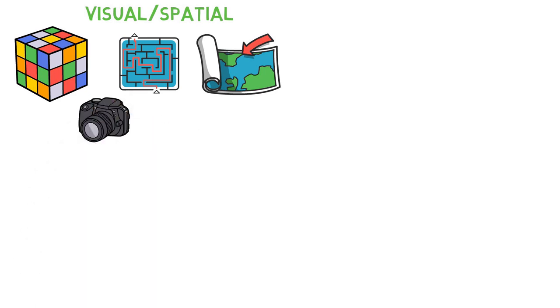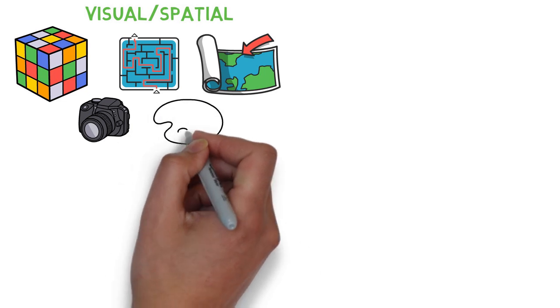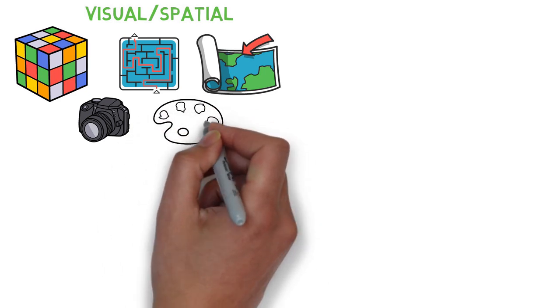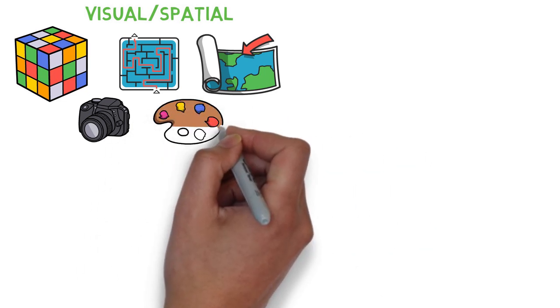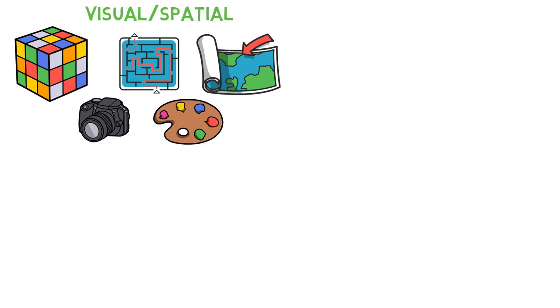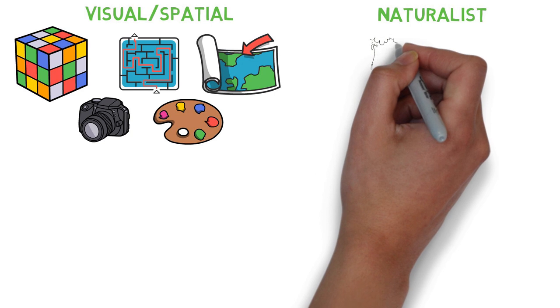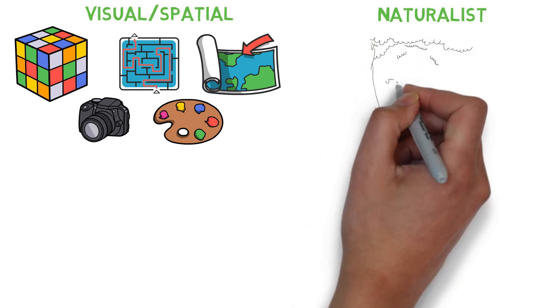People who have strong visual-spatial intelligence are for instance architects, sculptors, painters, art directors and graphic designers. The sixth type is naturalist intelligence.